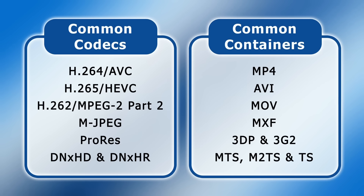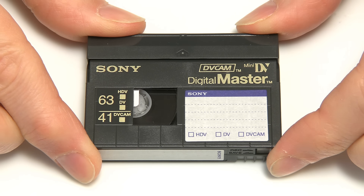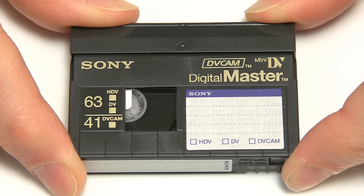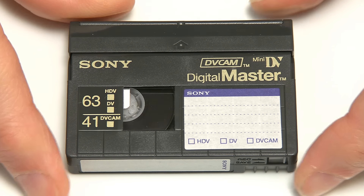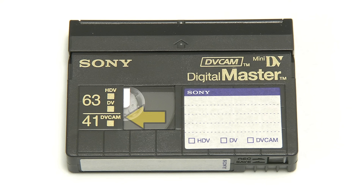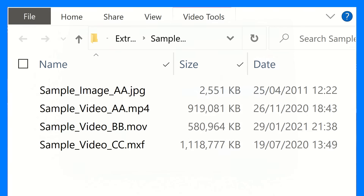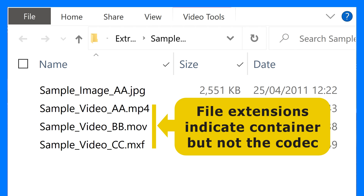Digital video is complex and can get somewhat confusing. To help us understand the critical concept of a video format being a combination of a codec and a container, let's take a look at a mini DV tape, which was for years a common means of storing digital video. A mini DV tape is a container and not a format, as it can be used to store video in three different ways: with a standard definition consumer DV codec, with a professional standard definition codec called DVCAM, and with a high definition codec called HDV. This means it's impossible to look at a DV tape and know its format — and precisely the same is true for digital video files, where the file extension indicates the container but not the video's codec.